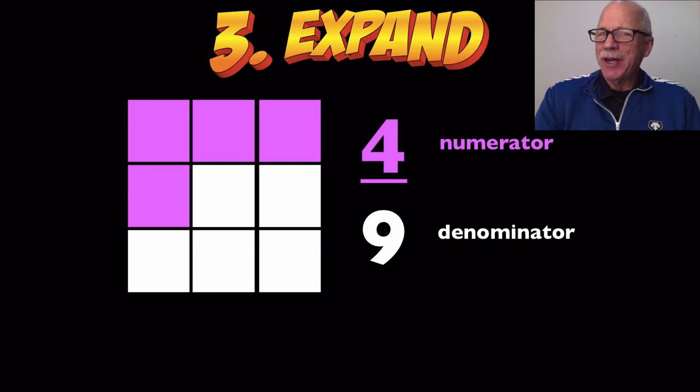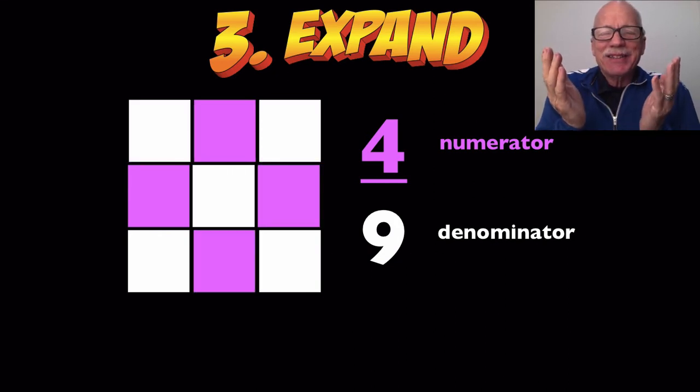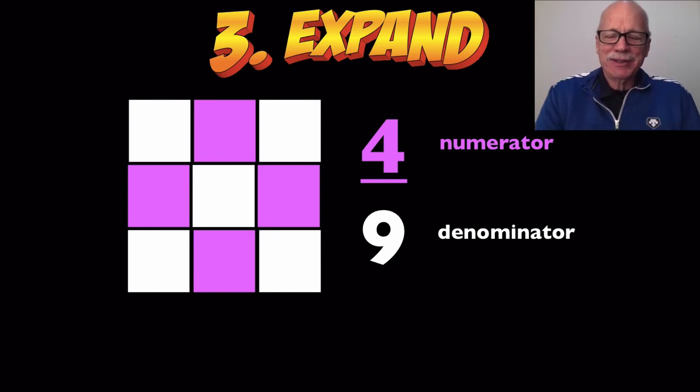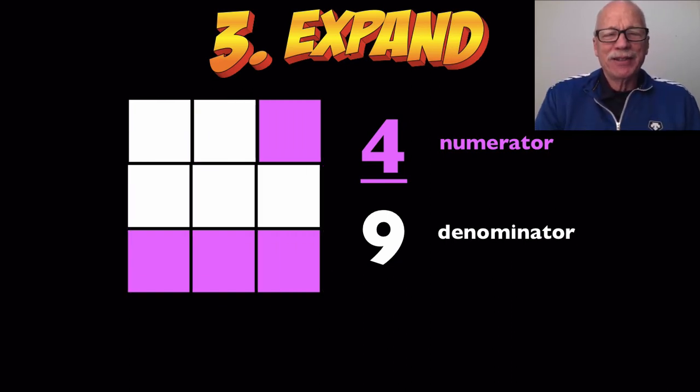Now guess what? It's the same fraction. The colors moved around. But you still got four of nine. See that? Four of nine. Some of those nine squares are purple. Four of them.